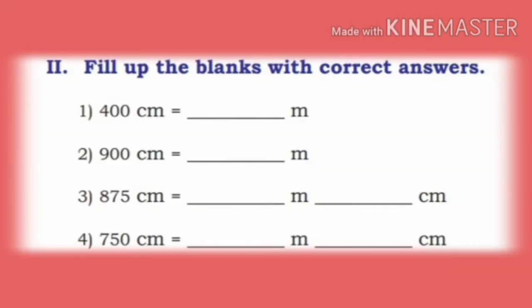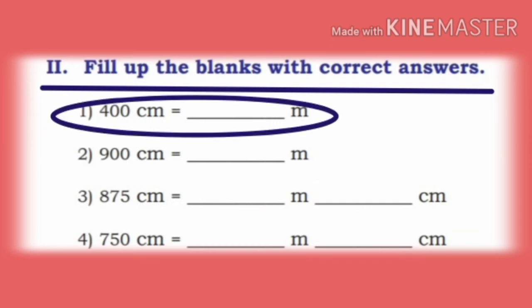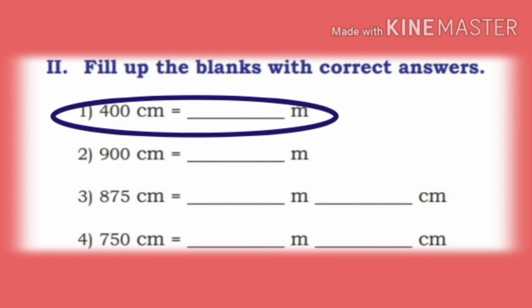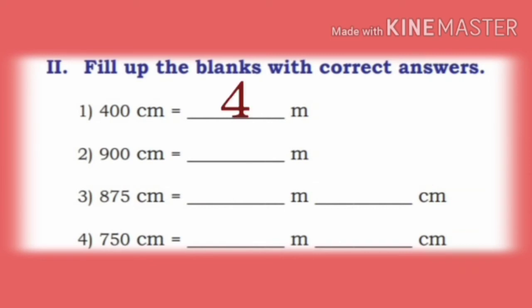Now we are going to the second section: Fill in the blanks with correct answers. First one: 400 centimeter is equal to dash meter. We divide 400 by 100. Cancel the zeros on numerator and denominator. So, we get the answer as 4. Let us fill 4 meter.